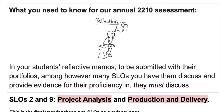Our annual assessment for the last several years has had our assessment team look at how students are performing on SLOs two and nine — project analysis and production and delivery. My intention was to change this for the next cycle of three years, but with everything going on with coronavirus and core writing, we're not going to do that this year. We're just going to stick with SLOs two and nine. You just need to be sure that when your students write their final reflection in their portfolio, they are emphasizing their work and providing examples of their proficiency in these two SLOs.